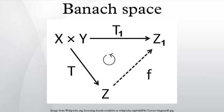For every Banach space X, the space B(X) of bounded linear operators on X, with the composition of maps as product, is a Banach algebra. A C*-algebra is a complex Banach algebra A with an antilinear involution a ↦ a*, such that ‖a*a‖ = ‖a‖². The space B(H) of bounded linear operators on a Hilbert space H is a fundamental example of a C*-algebra.